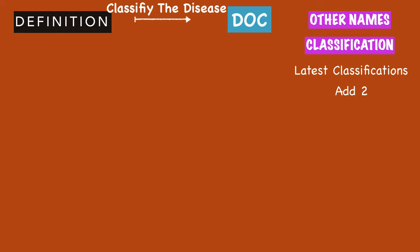So for definition, first classify the disease, write other names for it, then write the classification if available. If you want better grades, definitely write the most recent classification. The mnemonic to remember this is DOC.